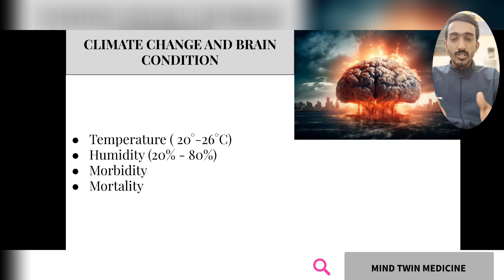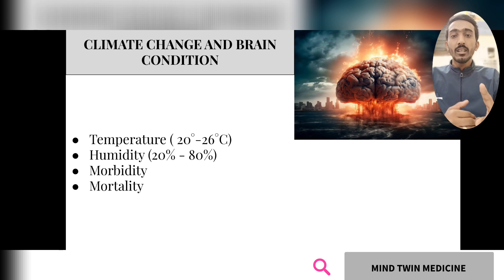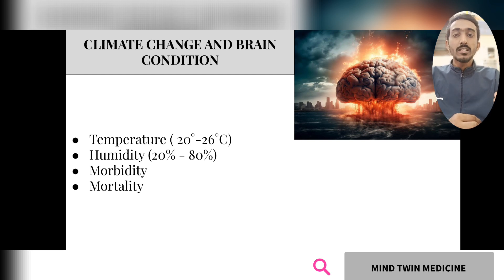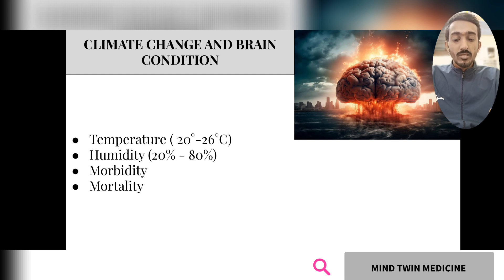The brain is adapted to temperatures of 20 to 26 degrees Celsius and humidity of 20 to 80 percent. If humidity or temperature goes outside these ranges, brain functioning changes. For people taking brain-related medications, increased or decreased humidity and temperature will affect medicine absorption and the body's ability to regulate temperature. Heat waves cause disruption in sleep patterns, increased stroke, and increased seizure risk. Overall, climate change leads to higher morbidity and mortality rates.